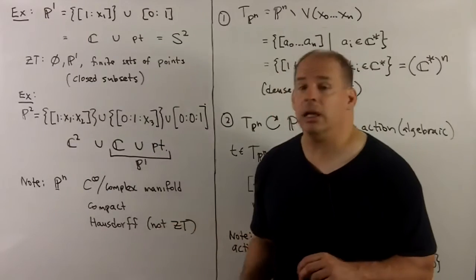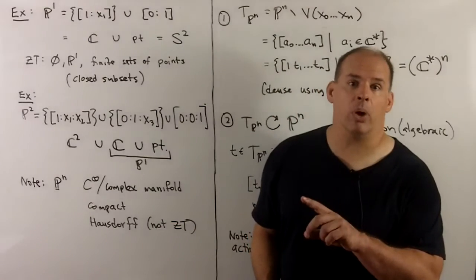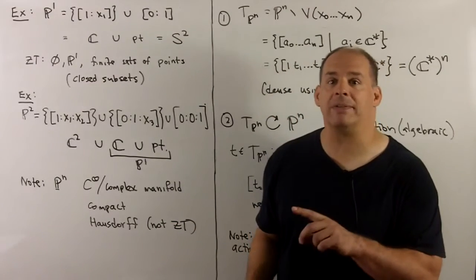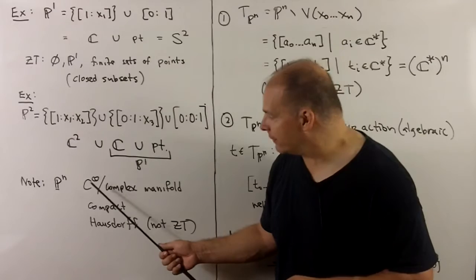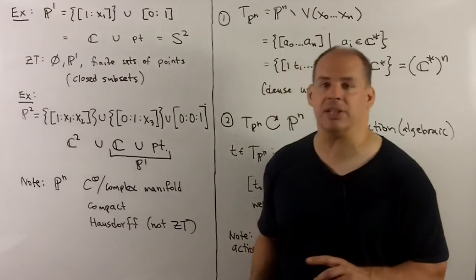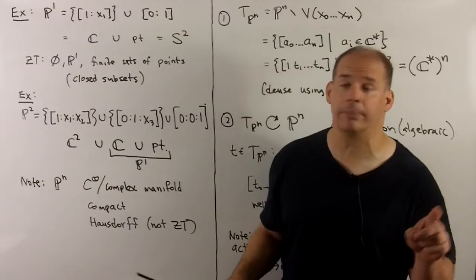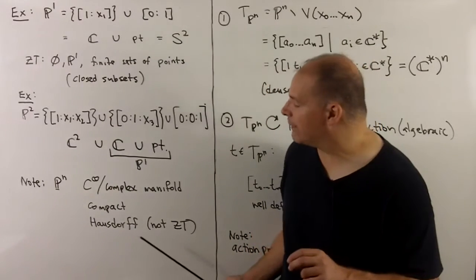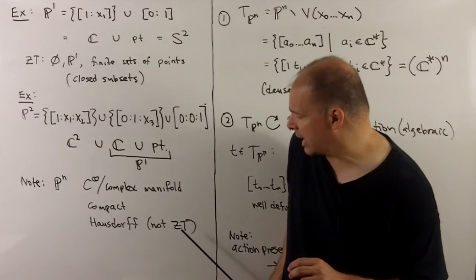P^n has the structure of both a complex manifold and a smooth manifold. In these topologies it's compact and Hausdorff — though note it is definitely not Hausdorff in the Zariski topology.